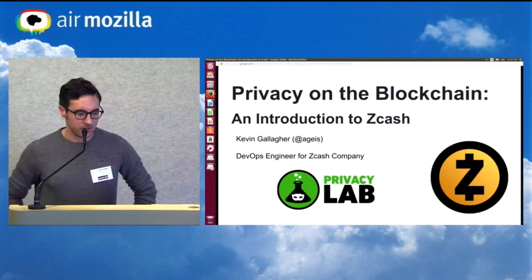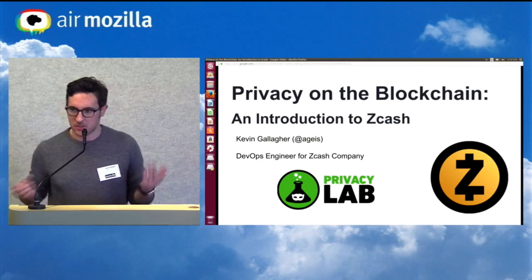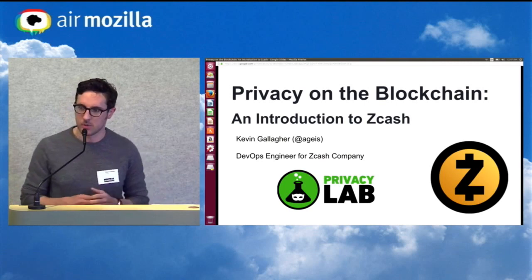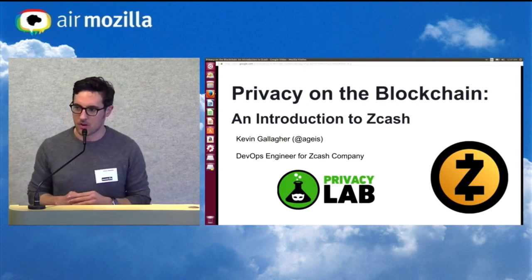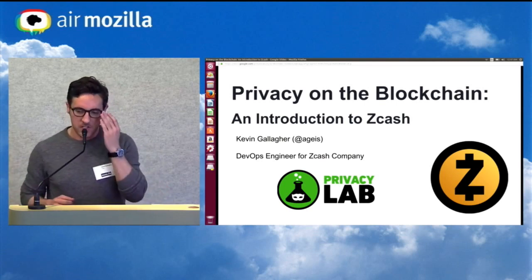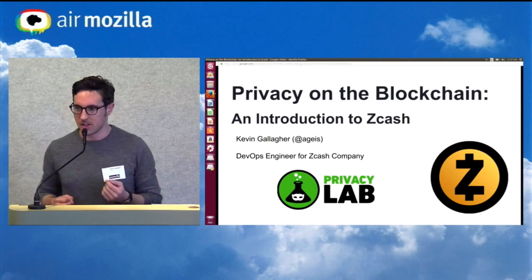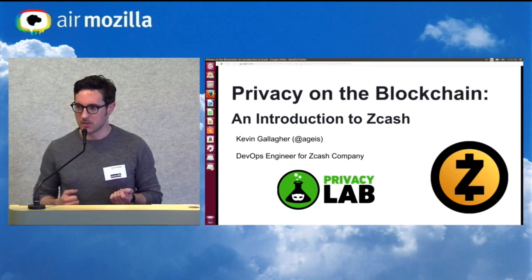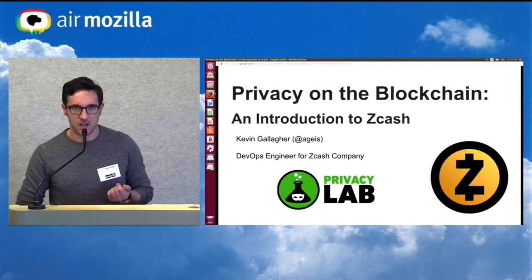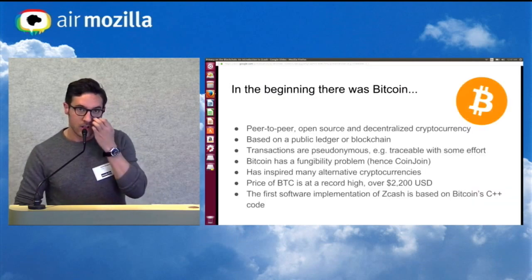Zcash is a private, anonymous cryptocurrency based on Bitcoin, which offers strong privacy in the form of shielded transactions, meaning you can send money to someone and have both the amount, the sender, and the origin of the payment not be disclosed.